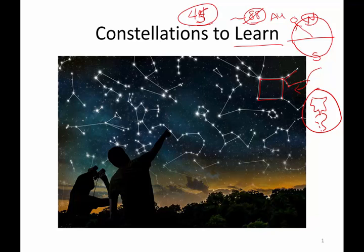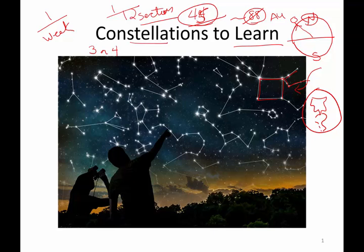I've broken this down into 12 different sections and we are going to go through a short section once per week. My goal is that once per week, for about 12 weeks, you are going to have three or four constellations that are going to be fair game on any quiz or any test. By the end of the course, by the midterm, you'll have all of the ones prior to that midterm, and by the end, all 45 are fair game.